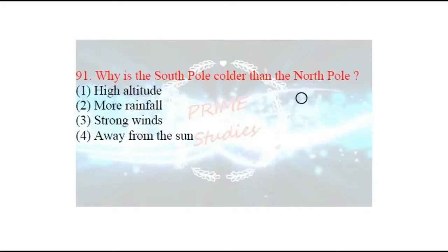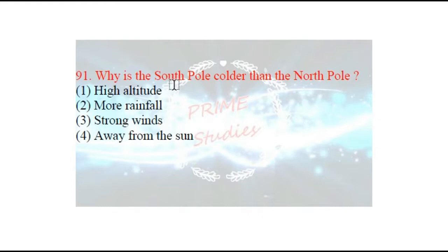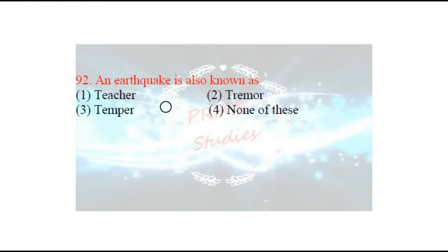Our first question is: why is the South Pole colder than the North Pole? The South Pole is colder because it is the landmass of Antarctica, which has a higher elevation due to glaciers. The height causes lower temperatures at the South Pole compared to the North Pole. So the right answer relates to the higher elevation of Antarctica.